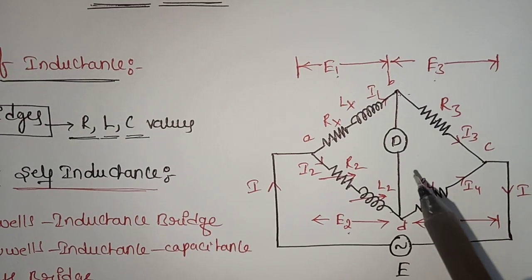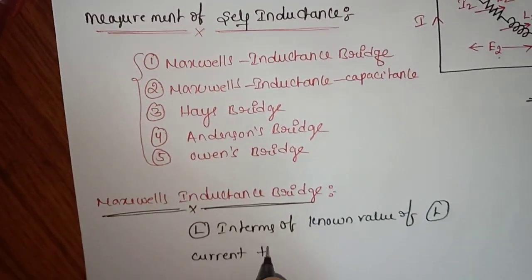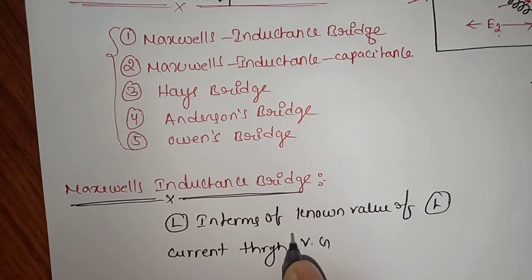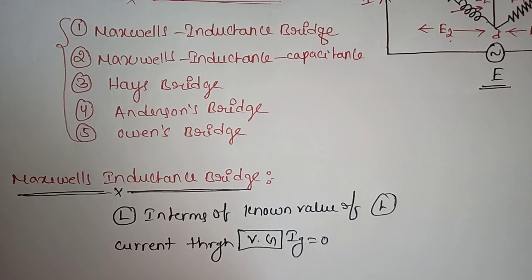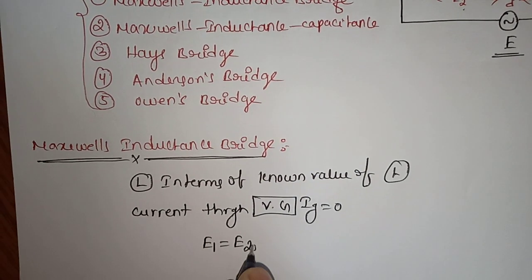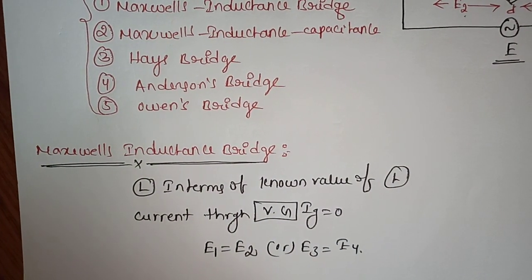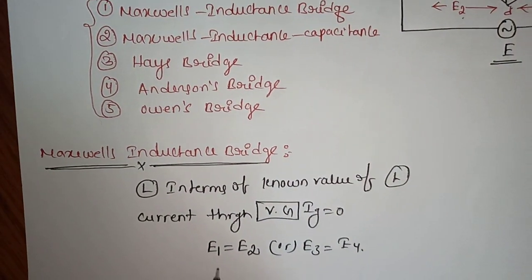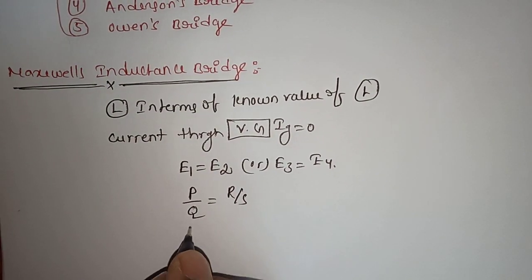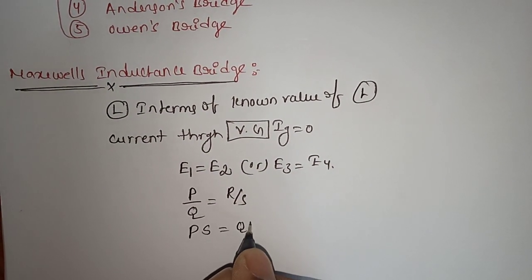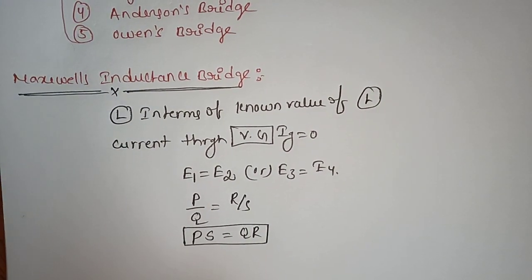We already know the balancing condition of a bridge circuit. If the current through the vibrational galvanometer is equal to zero, then the bridge is balanced. That means E1 equals E2, or E3 equals E4. In the Wheatstone bridge, the balancing condition is P/Q equals R/S, i.e., P·S equals Q·R. From this condition, we write the balancing condition for Maxwell's inductance bridge.